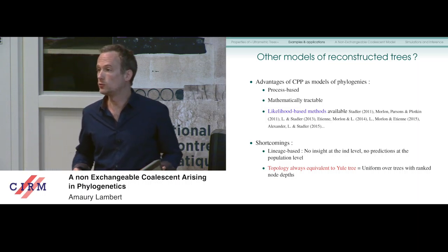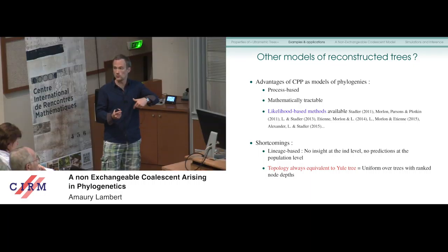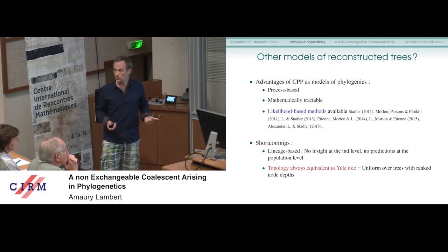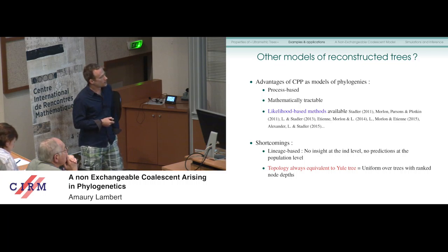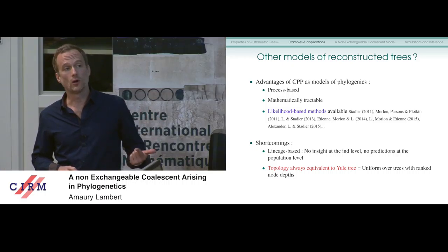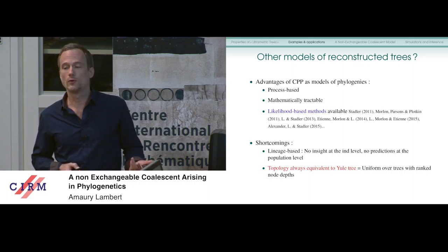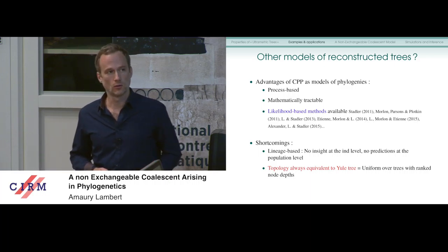The topology distribution is a uniform distribution over trees with ranked node depths — when you permute the depths you don't change the probability, so all such trees have the same probability. In contrast, as David Aldous has contributed importantly to showing, real phylogenies have a distribution far from the Yule distribution: they are more unbalanced than the Yule tree.